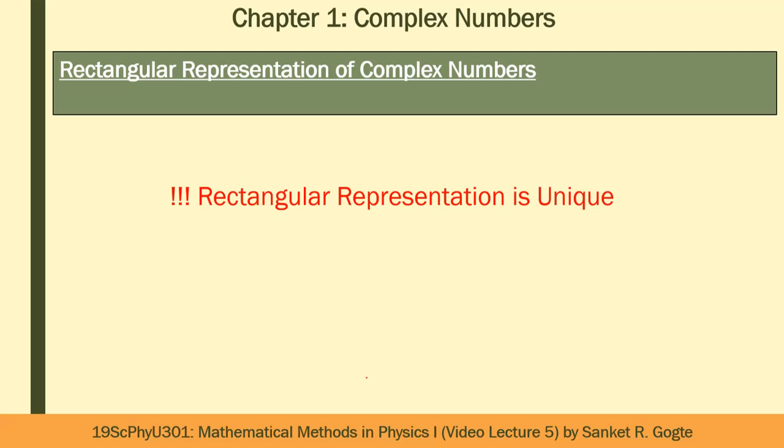Keep in mind that rectangular representation is unique in the sense that every complex number z uniquely gives you a single point in the Argand plane. This is not true for the other two coordinate systems — in those cases, different complex numbers can lead to the same point in the Argand plane. We will discuss this in depth in future lectures. For now, just remember that rectangular representation is unique: one complex number leads to a single point.